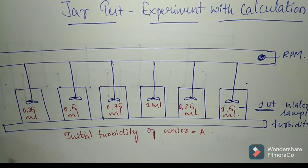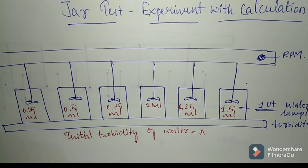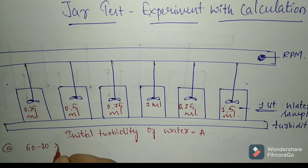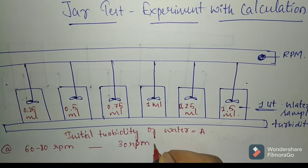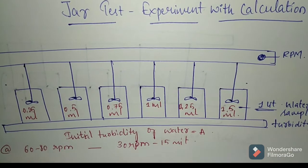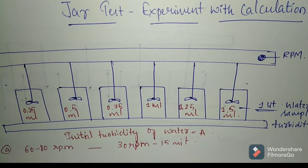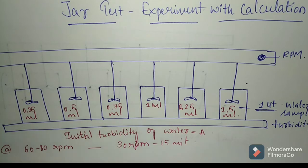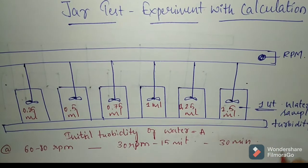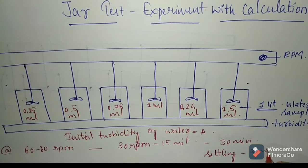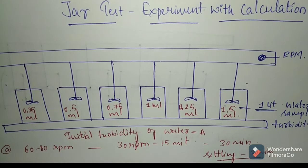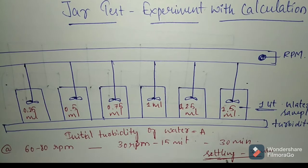After adding the coagulant dosage, we will go for flocculation. Flocculate the samples rapidly for about one minute with mechanically operated paddles at around 60 to 80 RPM, followed by gentle stirring at about 30 RPM for 15 minutes. Then remove the jars from the stirring device. Let the samples stand for at least 30 minutes for settling of the flocs. Settling is directly proportional to time.